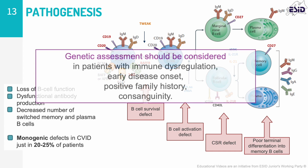Increased access to next-generation genetic sequencing has allowed the identification of more pathogenic gene variants in these patients. To date, there are no clinical guidelines for genetic workup for CVID patients. However, genetic assessments should be considered in patients with clinical signs of immune dysregulation, early disease onset, or a positive family history.